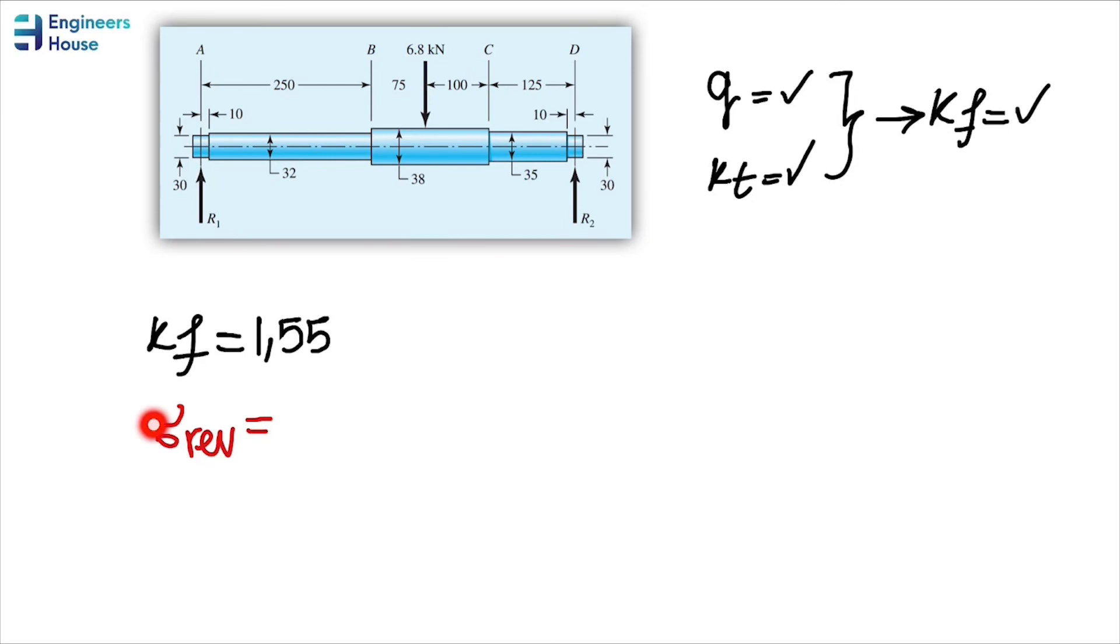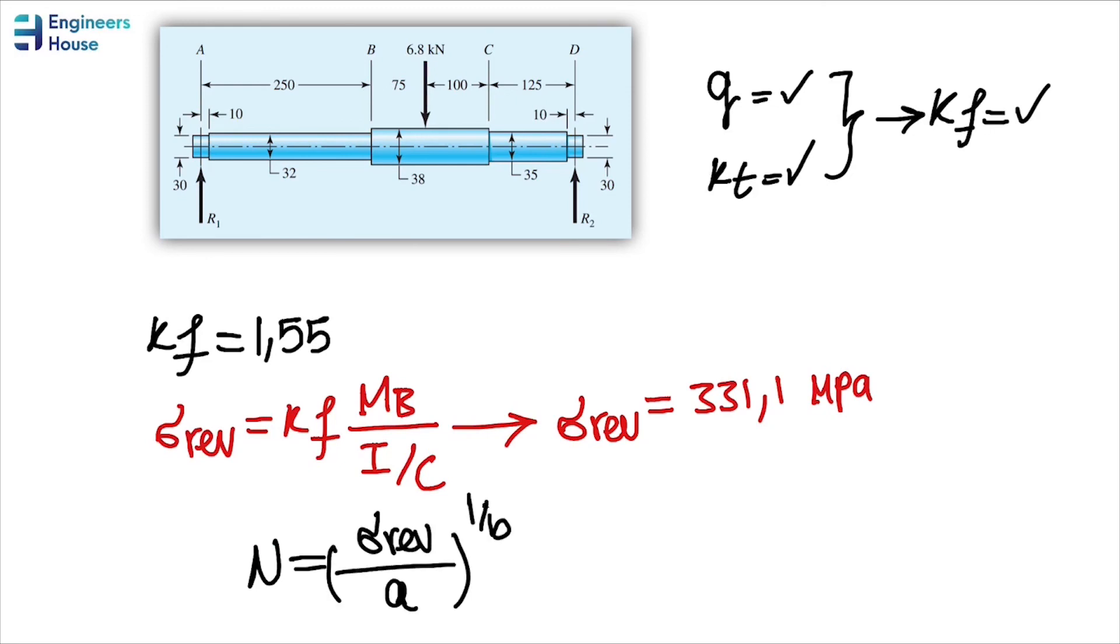So the reverse stress or SF is finally going to be calculated. Plugging the values for this equation will lead us to this answer. Then finally, we can calculate the number of cycles. We have B, A, and sigma reversed. This value is what the question asked us - we have the number of cycles.